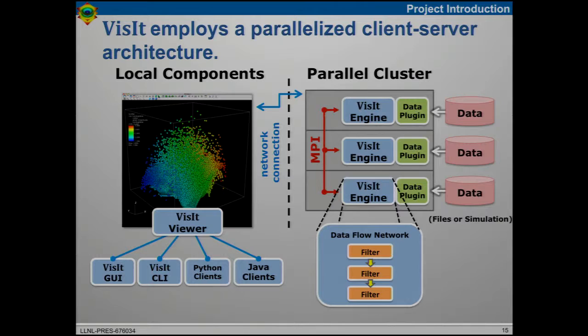VISIT uses a client-server architecture to scale from laptops to supercomputers — similar to ParaView. You run the GUI on your laptop, and the parallel processing happens on a remote server. Instead of streaming all the data back, you stream rendered images or summary numbers. On the client side, the viewer coordinates everything and there's the GUI and a Python-based CLI. On the server side, that's where MPI runs and we use dataflow networks to execute complex visualization pipelines. For parallel rendering, if your data is small enough, it sends it to your laptop; otherwise it renders in parallel on the remote resource.